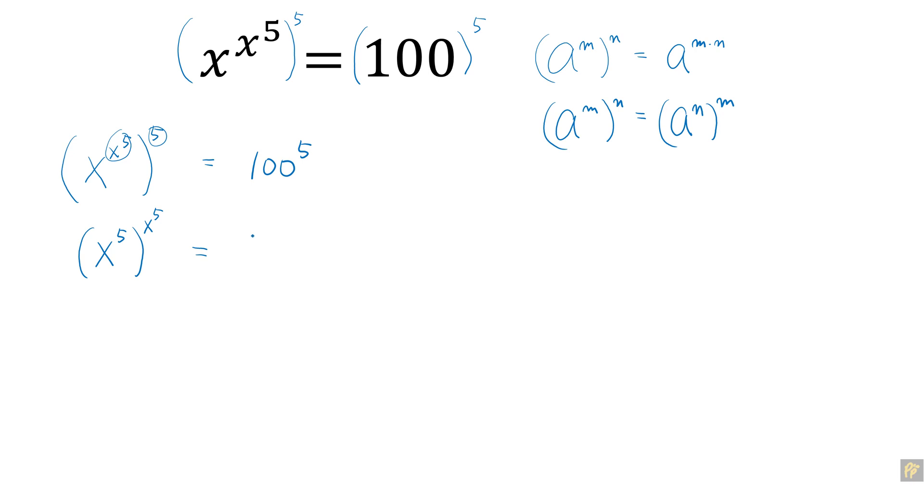You can create a self-similar expression on the right-hand side by writing 100 as (10 to the power of 2) to the power of 5. Using the law of exponents, this equals 10 to the power of 10.